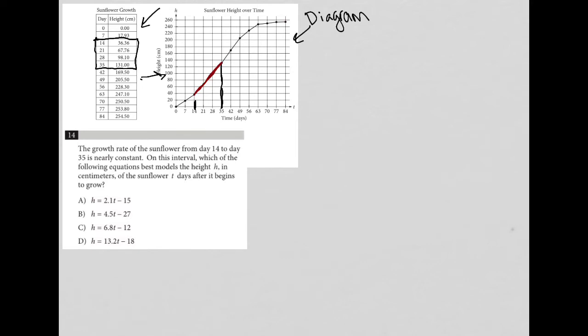Because the question is asking us to figure out which equation matches that data trend between 14 and 35 days, I'll use a strategy called plug in information from the question. If I focus only on day 28, that would tell me that when t equals 28, I want h to equal 98.1.